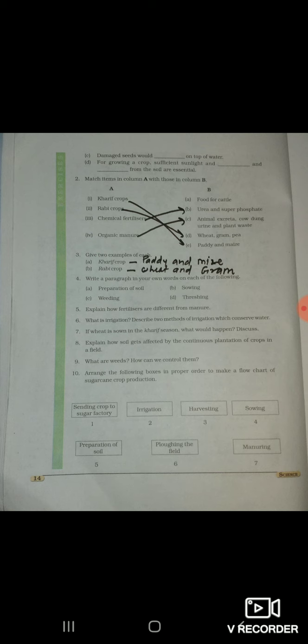In first chapter, first question is, select the correct word from the following list to fill in the blanks. First, the same kind of plants grown and cultivated on a large scale at a place is called [crop]. The first step before growing crop is [preparation] of the soil. Damaged seeds [float] on top of water. For growing a crop, sufficient [water] and light and [nutrients] from the soil are essential.